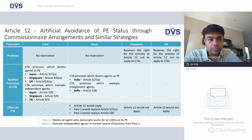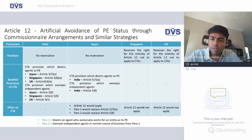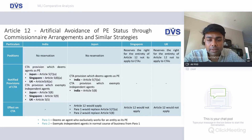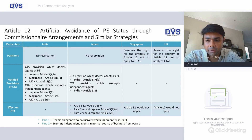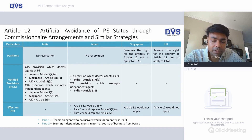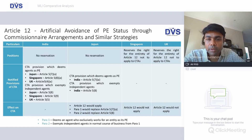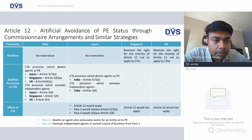Article 12 deals with artificial avoidance of PE status through commissionnaire arrangements and similar arrangements. We have seen these provisions gradually seep through in India via Section 9 on business connection, where independent and dependent agents' scope of work has been addressed. India has welcomed the provisions of Article 12; Japan also has no reservations. But Singapore and UK have categorically stated they will not apply Article 12 to their treaties. Article 12 would apply to the India-Japan treaty, and Para 1 would replace Article 5.7 while Para 2 would replace Article 5.8. Para 1 deems an agent who exclusively works for an entity as its PE, and Para 2 exempts independent agents acting in the normal course of business. No change for India-Singapore and India-UK DTAs.